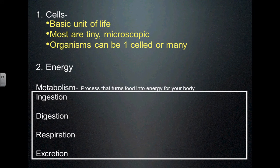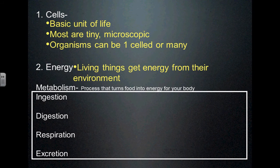So first, all living things are made of cells. Second, all living things need to obtain and use energy and get that energy from their environment in some way. Right now you're using up energy as you move your hands to write your notes — your muscles are using energy. As your brain is working to listen to what I'm saying, it's using energy. To keep you breathing, you're using energy. We need a constant source of energy and we can't make it on our own — we have to get it somewhere. The way we get energy is through metabolism.